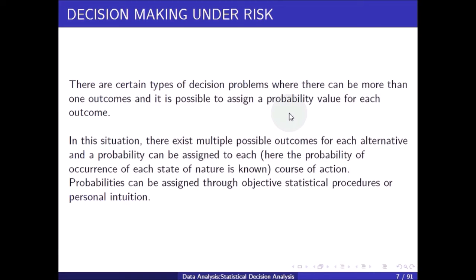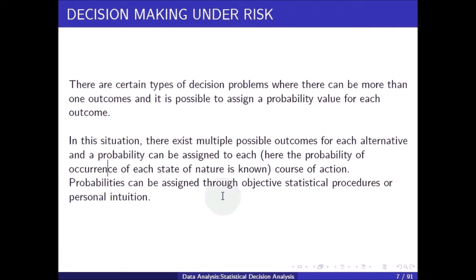Decision making under risk involves decision problems where there can be more than one outcome and it is possible to assign a probability value for each outcome. Multiple possible outcomes exist for each alternative, a probability can be assigned to each course of action, and the probability of occurrence of each state of nature is known. Probabilities can be assigned through objective statistical procedures or personal intuition.